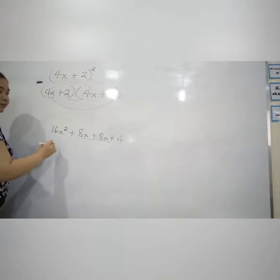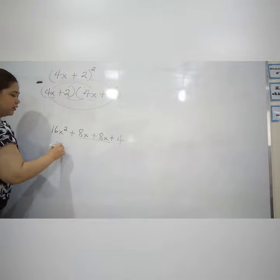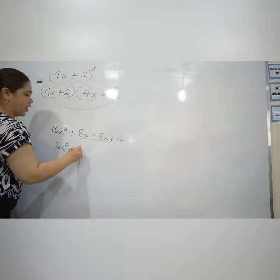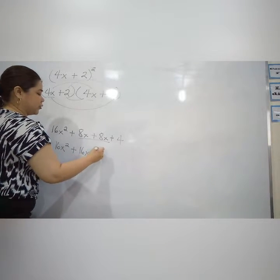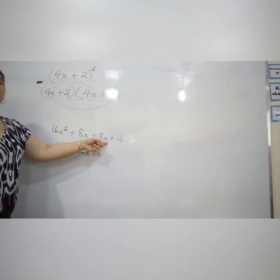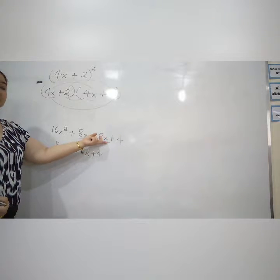So, and then we have similar terms that we can combine. The 8x and 8x. Okay, 16x. Okay, plus 16, 4 plus 4.